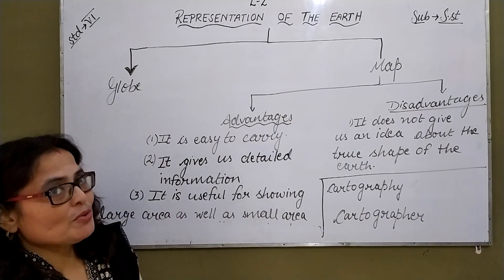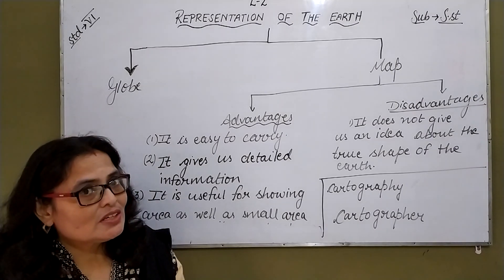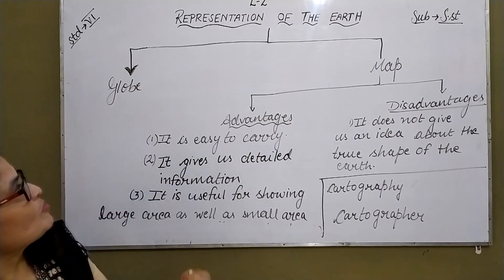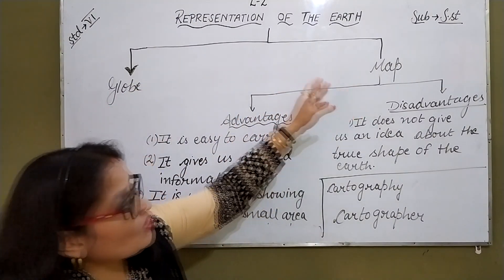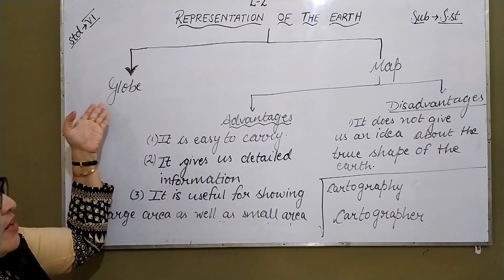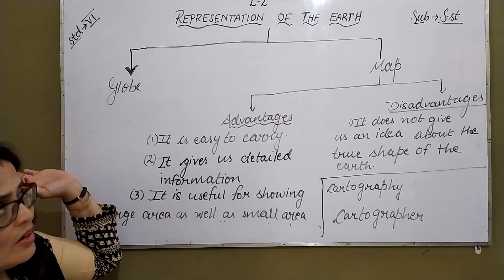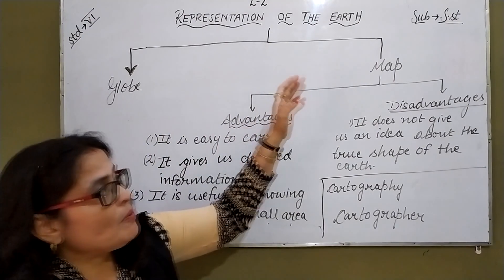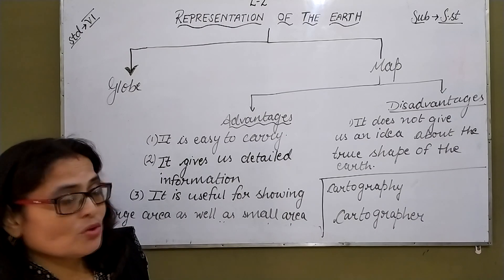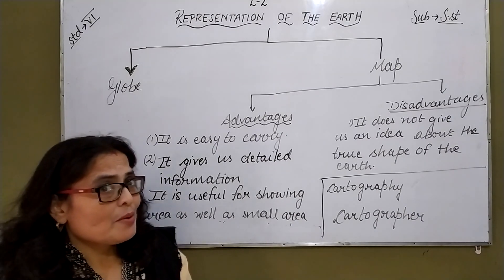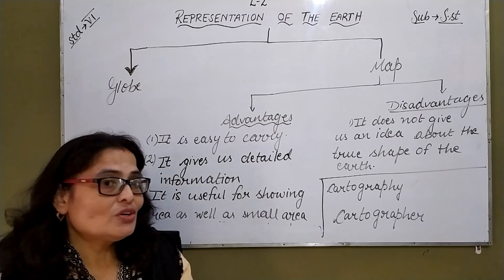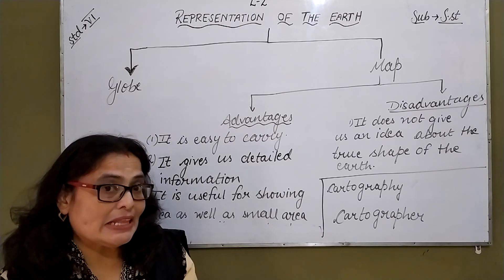We have already started our second chapter of geography, that is representation of the earth. In that chapter, I have already told you that earth can be represented in two ways: by using globe and map. In the previous video, we have already discussed about the globe — its advantages, disadvantages, and limitations. Now, earth can also be represented with the help of a map. Today I am telling you about the map. A map is a drawing of the earth on a flat surface as per the scale, and a map is also 2D because it has only length and breadth.